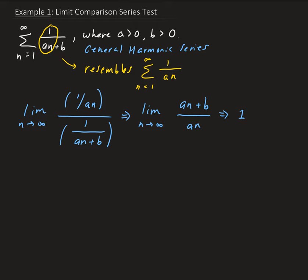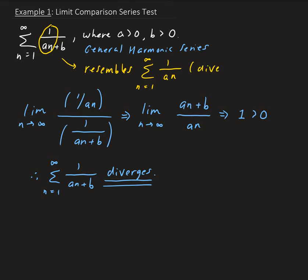So therefore, by the limit comparison test, because the series that resembles this is diverging, the original series is going to diverge. Because this limit is finite and greater than zero, 1 over (an plus b) is going to diverge. The series we chose is diverging — it's a harmonic series with a coefficient of 1 over a, and that's diverging. Because the limit of the ratio of the nth terms is greater than zero, the original series is diverging.